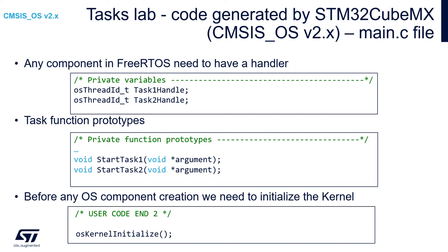Within the main function we can see the classical hardware configuration: HAL init, clock configuration, and initialization of each peripheral selected in the configurator — in this case only GPIO. After this there is a space for our configuration before the main code runs. After the USER CODE END 2 section, there is a call to osKernelInitialize, which allocates the memory stack dedicated for the operating system. This function must be called before any OS component is created.